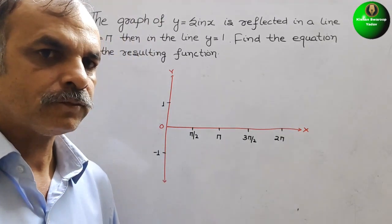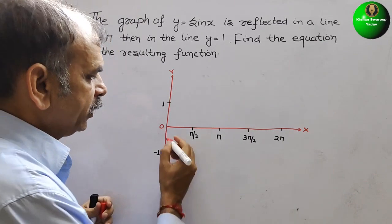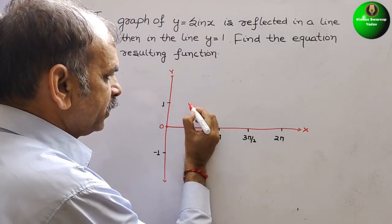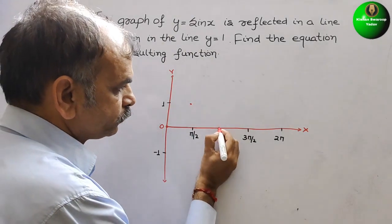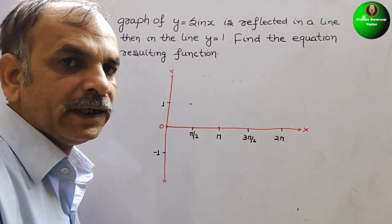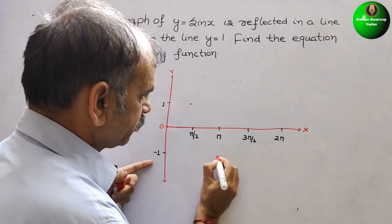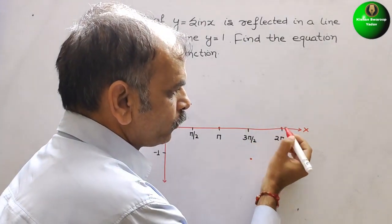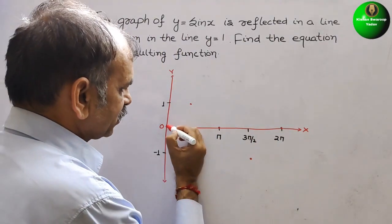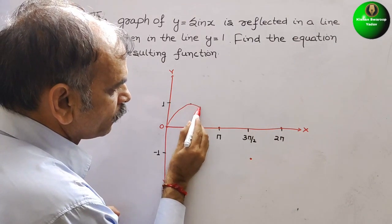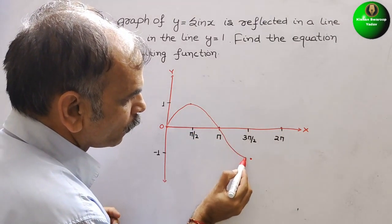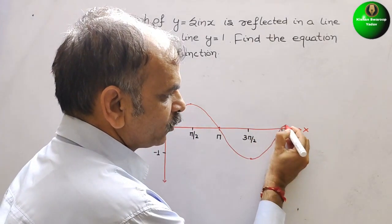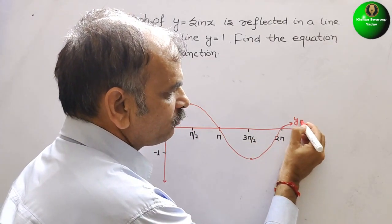Sin 0 is 0. Sin pi by 2 is 1. Sin pi (180°) is again 0. Sin 270° or 3 pi by 2 is minus 1. And sin 2 pi is again 0. So now your original sin graph will be drawn like this. This is your original graph — y equals sin x.